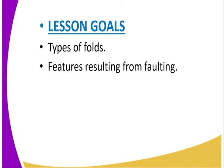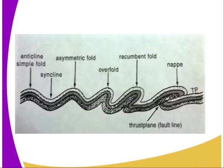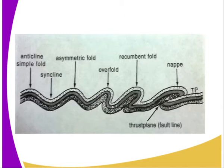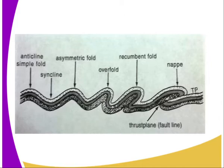The first thing we are going to look at is the lesson content. We are going to look at the types of folds and the features resulting from folding. We start by looking at these types of folds. We have the asymmetrical fold, the simple fold, the overfold, the recumbent fold, the nappe, and also the thrust plane fold. We consider the anticline and syncline when giving these folds different names.